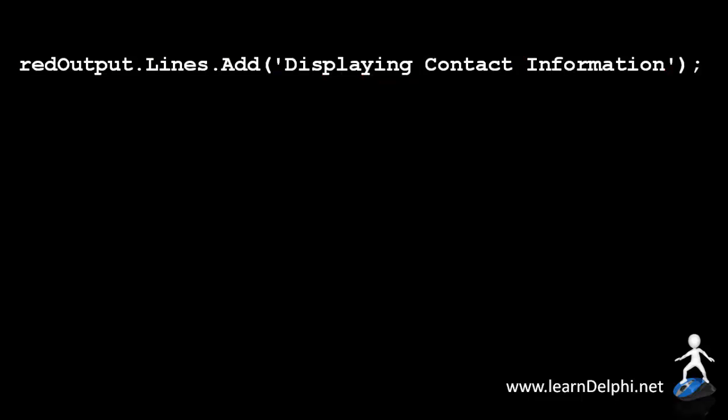In this case, red output is an object. But the lines property of a rich edit is also an object that contains zero or more lines of strings or text. So in this context the lines property of the rich edit will be our object.